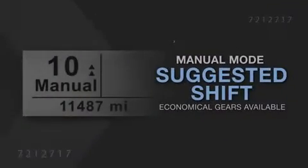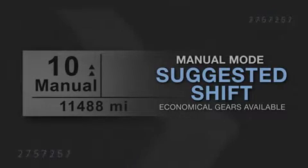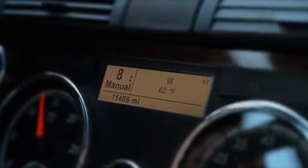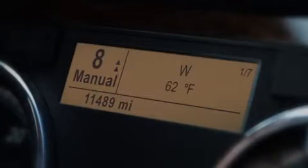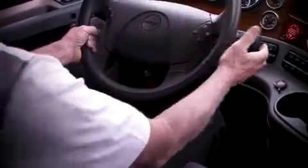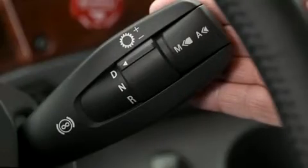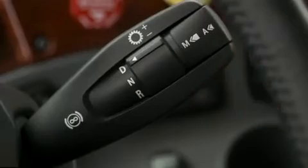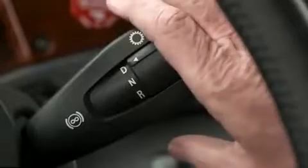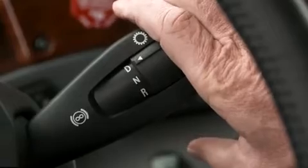In manual mode only, a suggested shift is displayed to indicate the most economical gear available. The suggested shift is the number of up or down arrows from the current gear, with a maximum of two up or down arrows. If you have two up arrows on the dash, you can pull the shifter stalk towards you and hold to upshift to the highest gear available. The same method can be used for downshifting in manual mode.